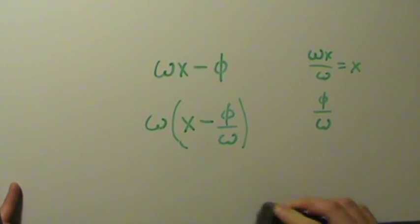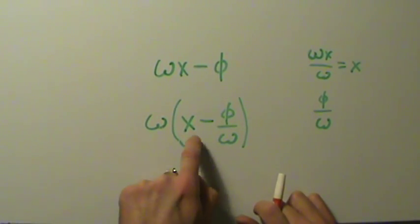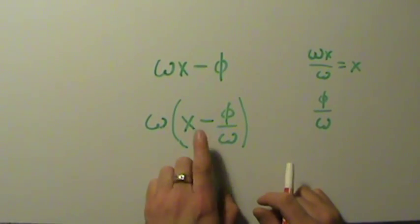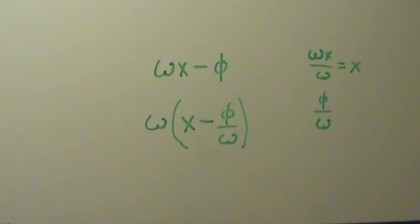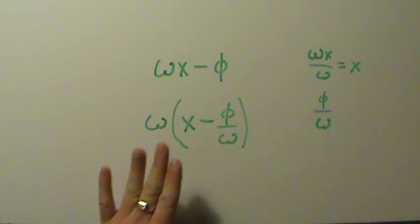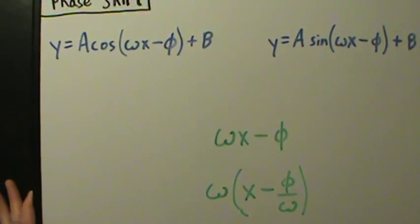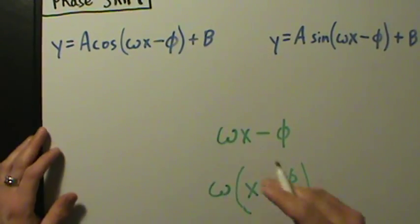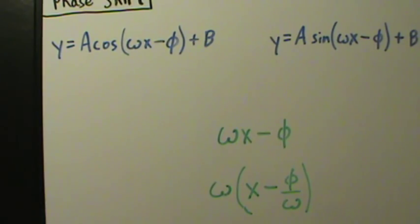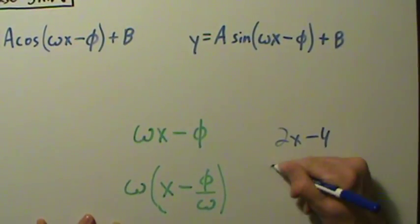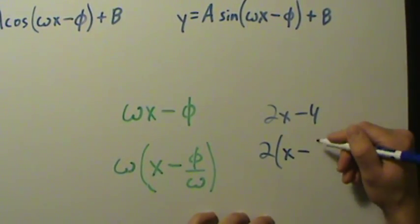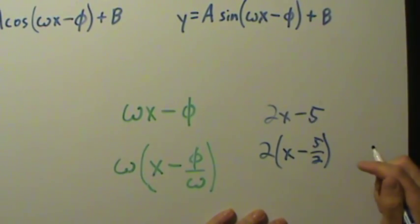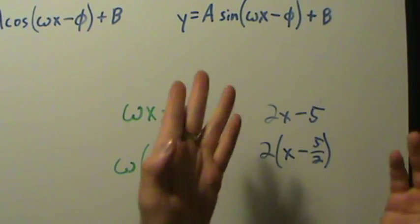So omega x minus phi is the same as omega times the quantity x minus phi over omega, by straightforward factoring. It's like having 2x minus 4: if you factor out a 2, you get 2 times x minus 2. Instead of 2 and 4, we just have omega and phi. It's literally the exact same reasoning.